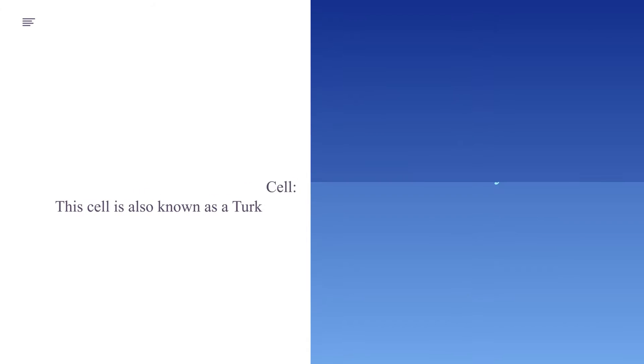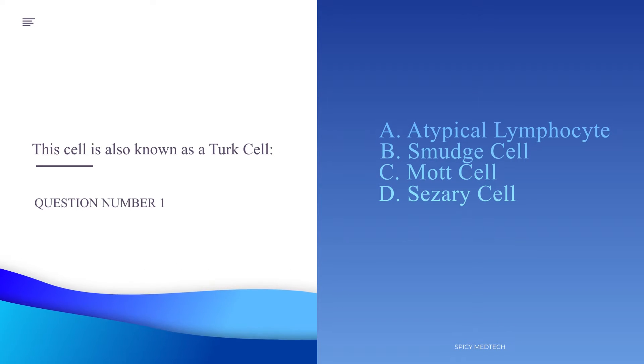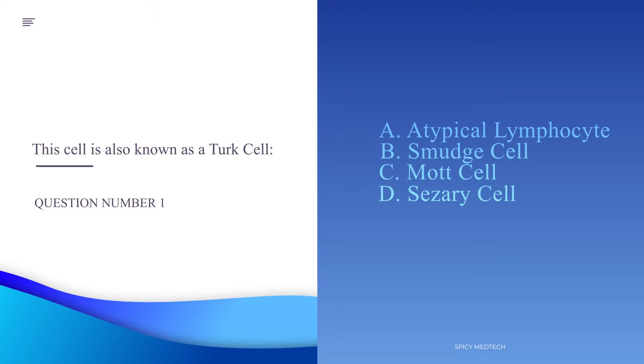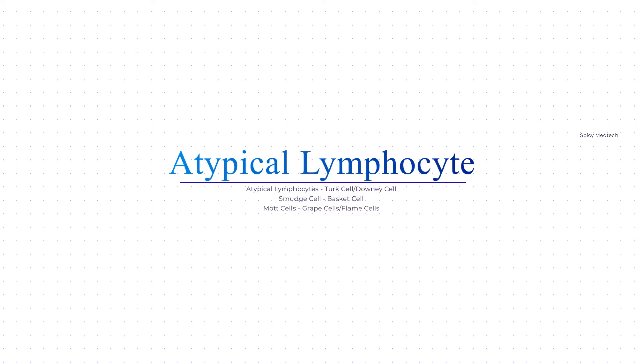Number one: This cell is also known as a Turk cell. A. Atypical lymphocyte, B. Smudge cell, C. Mott cell, or D. Cesare cell. The answer is letter A, atypical lymphocyte. An atypical lymphocyte is a non-malignant leukocyte that results from the interaction of lymphocytes to an antigen. It can also be called a Downey cell. The other name for smudge cell is basket cell. Another name for Mott cells is grape cells or flame cells. Cesare cells are lymphocytes with a cerebriform nucleus, observed in multiple myeloma.